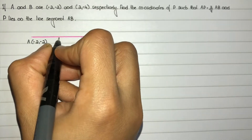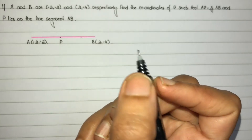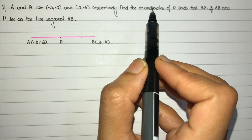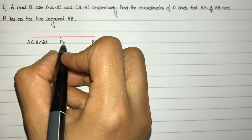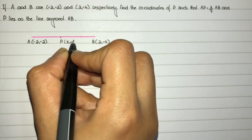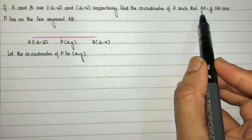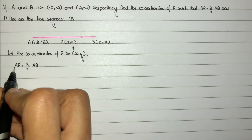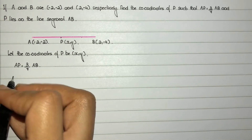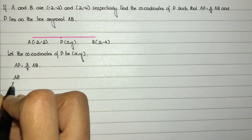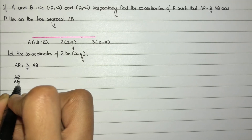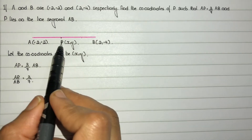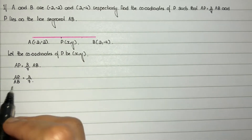Let the coordinates of P be (x, y). Given that AP is equal to 3/7 of AB, that is AP divided by AB is equal to 3/7.